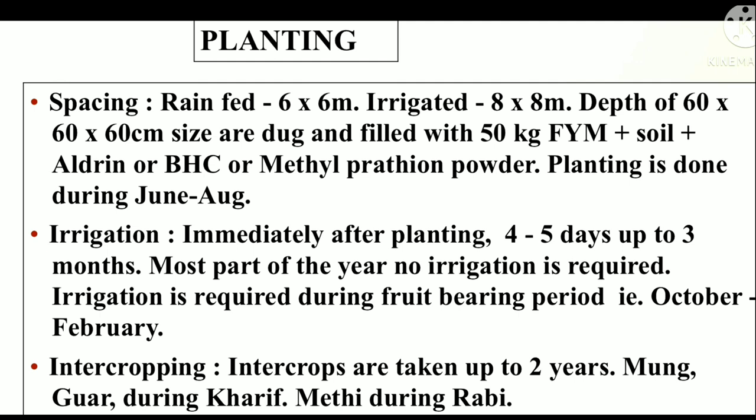Now, planting. Spacing: in rain-fed grove, 6 x 6 m, and in irrigated grove, 18 x 8 m. Pit depth is 60 cm with size 16 x 16 x 60. Pits are dug and filled with manures and fertilizers. Planting is done in June to August. Irrigation: immediately after planting, then every 4 to 5 days up to 3 months. Most part of the year no irrigation is required. Irrigation is required during fruit period, that is October to February. Intercropping: intercrop are taken up to 2 years — Moong, Guar during Kharif season and Methi during Rabi season.